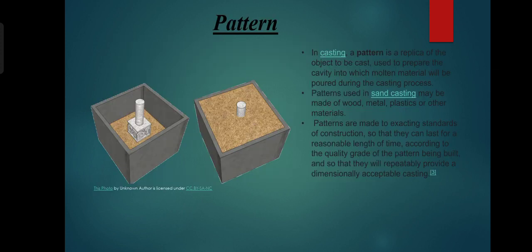And then pattern. In this picture we can see that around the product sand is there. In casting, a pattern is a replica of the object to be cast, used to prepare the cavity into which molten material will be poured during the casting process.